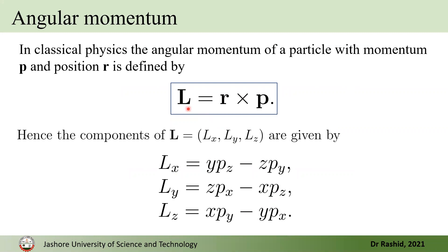In classical mechanics, we define the angular momentum as L vector equals r cross p, where r is the position vector and p is the momentum vector. The order matters for a vector cross product. If we write the angular momentum as components Lx, Ly, Lz, from this cross product we can write Lx equals y·pz minus z·py.